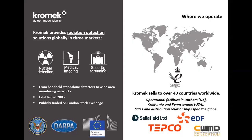Chromec provides radiation detection solutions globally in three markets: nuclear detection, medical imaging, and security screening. Chromec is a UK-US company headquartered in the northeast of England, with extensive manufacturing sites in both the UK and the US, and we sell our products globally.